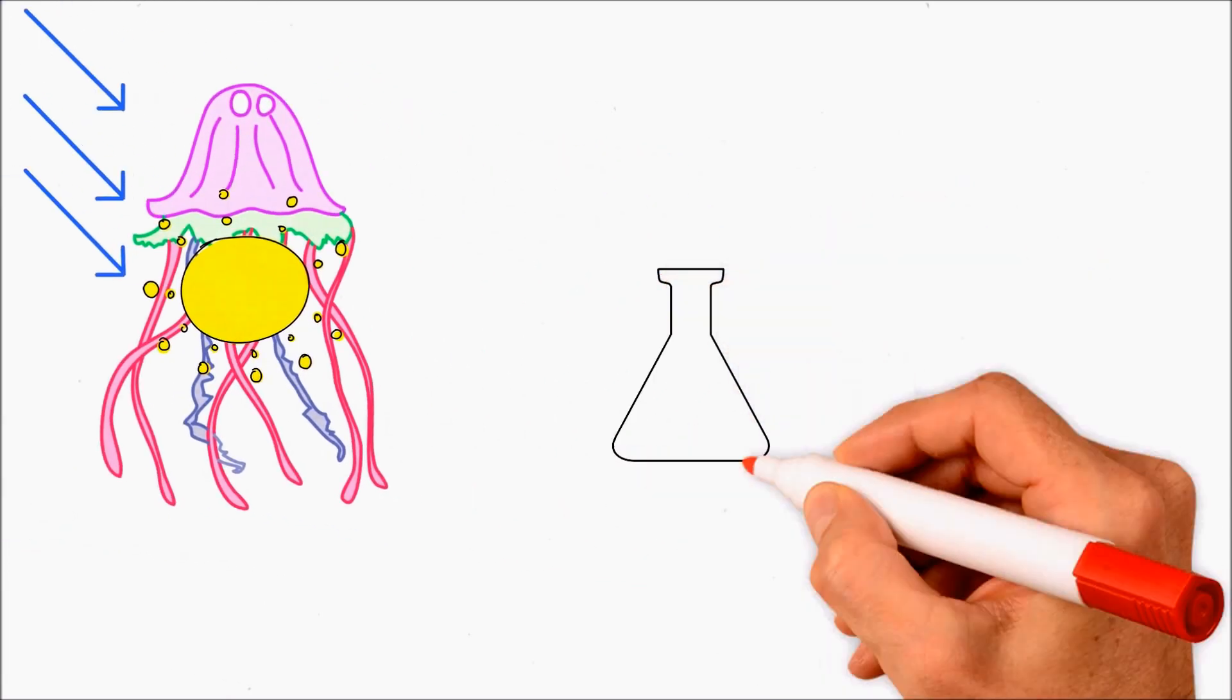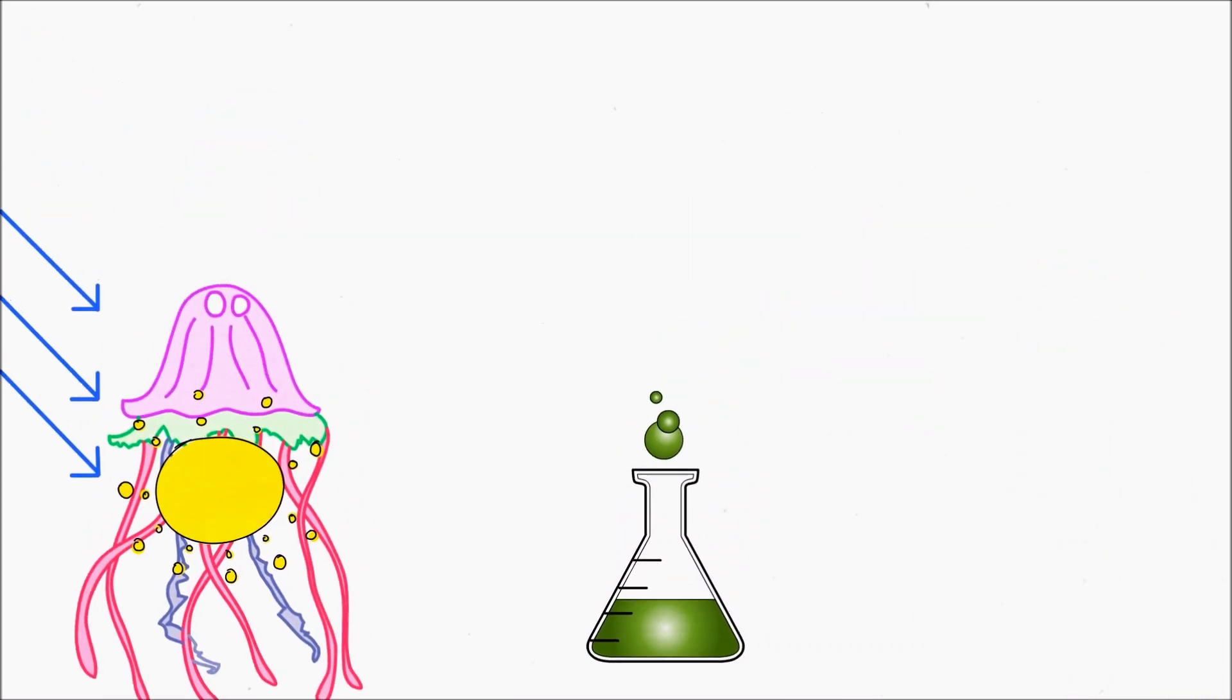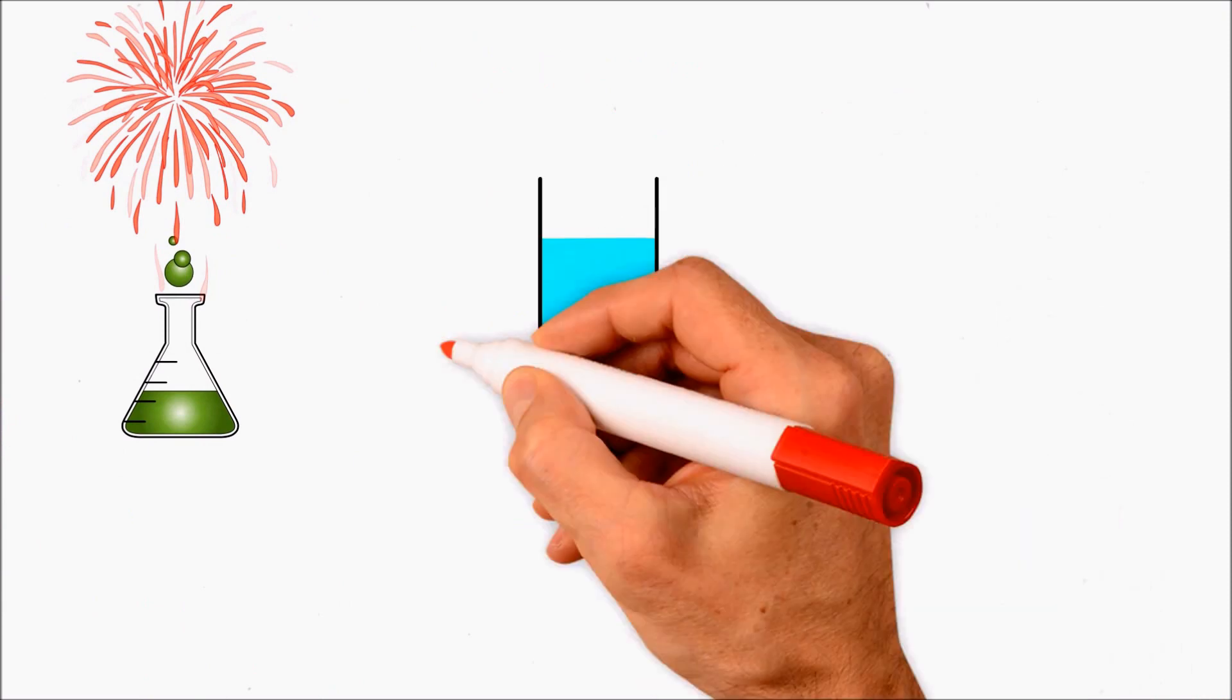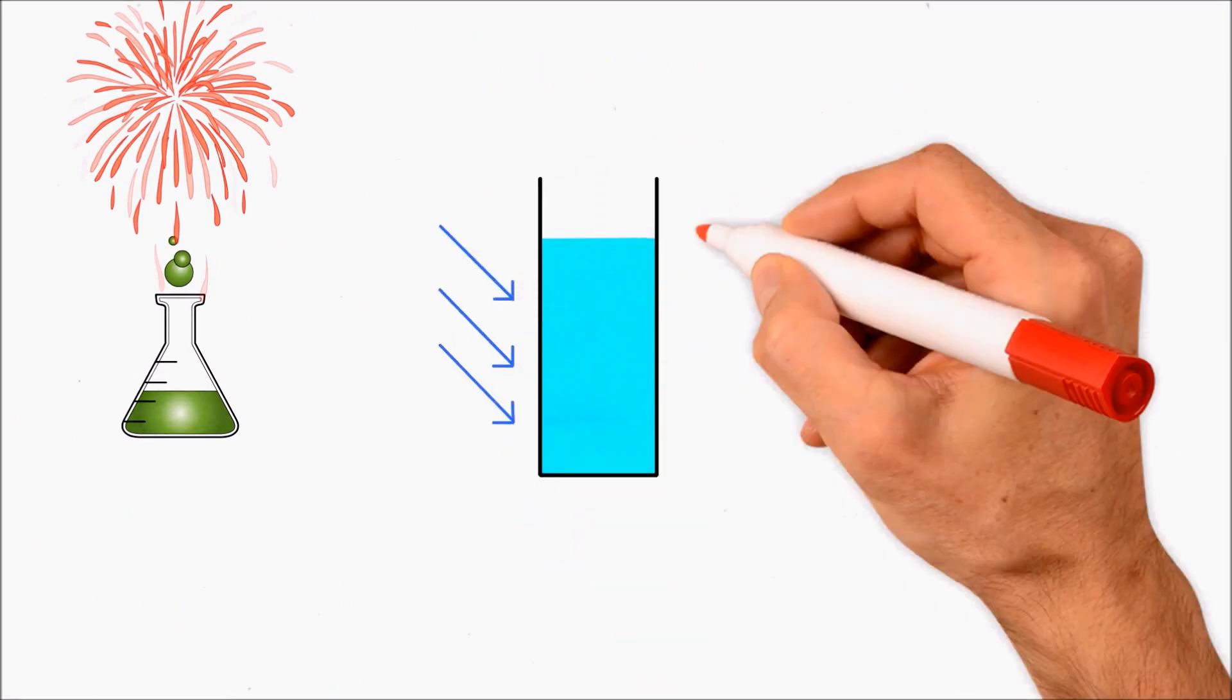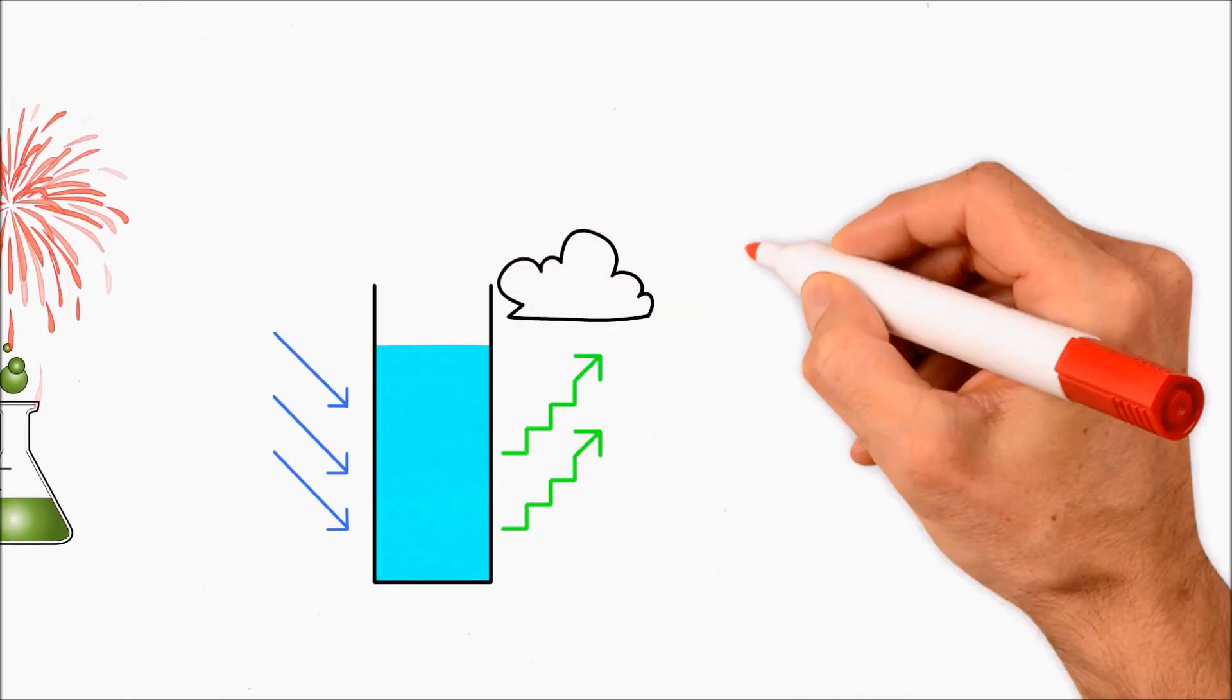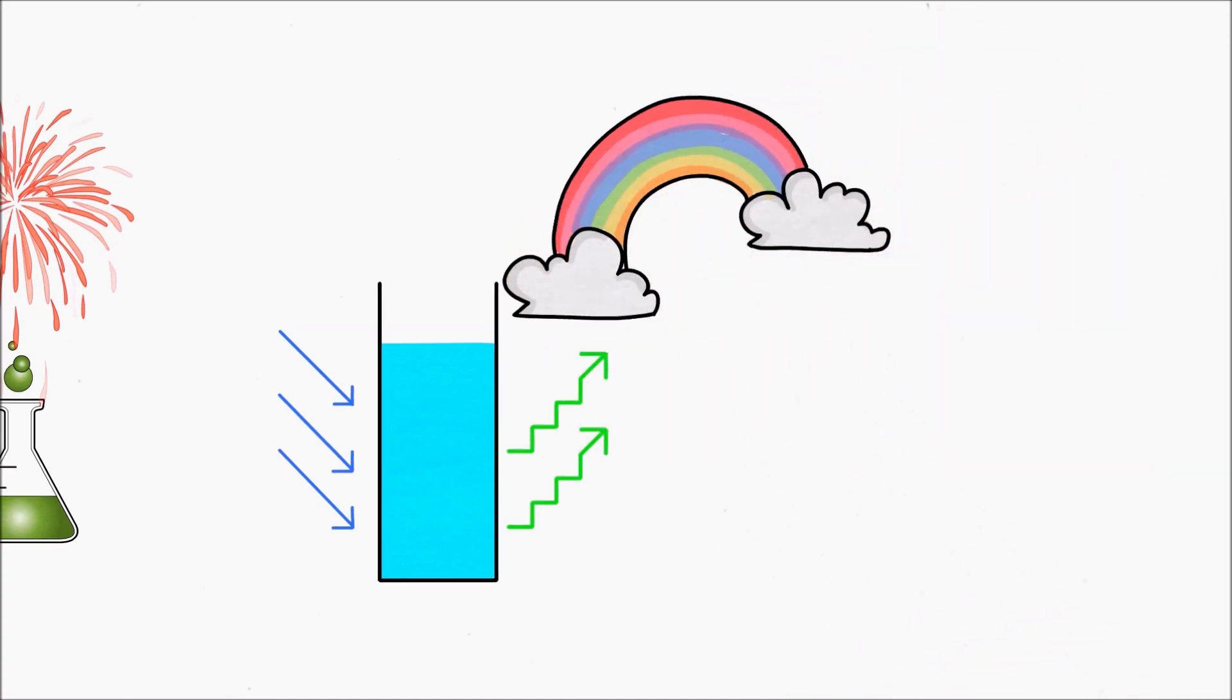Now fluorescence is significantly different from bioluminescence because bioluminescence involves a chemical reaction, whereas in the case of fluorescence, the fluorescent substance will absorb certain wavelengths of light and then emit a different wavelength. Usually this emitted light is in the visible spectrum so that we can see it using our naked eye.